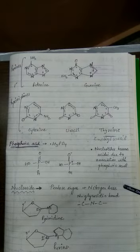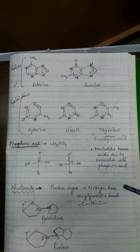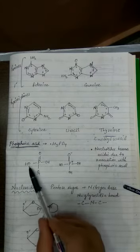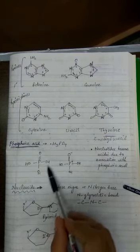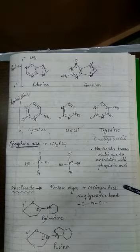Apart from nitrogen bases, phosphoric acid is also present in nucleotides. Phosphoric acid tends to develop bonds because there are three hydroxyl groups always available to undergo reactions. All three components — pentose sugar, nitrogen base, and phosphoric acid — join together to form a nucleotide.